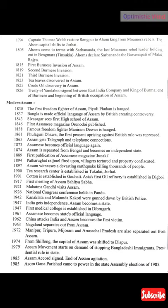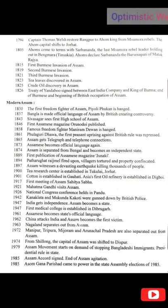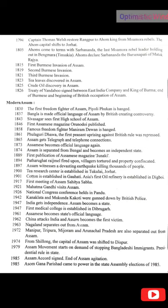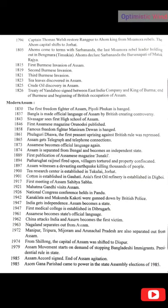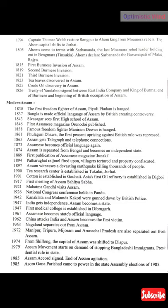In 1942, Kanaklata and Mukunda Kakoti are gunned down by British police. In 1947, India gets independence and Assam becomes a state. In 1947, the first medical college is established in Dibrugarh. In 1961, Assamese becomes the state's first official language. In 1962, China attacks India and Assam becomes the first victim. In 1963, Nagaland separates out from Assam — this year is important. In 1972, Manipur, Tripura, Mizoram, and Meghalaya are also separated from Assam — this year is also important.